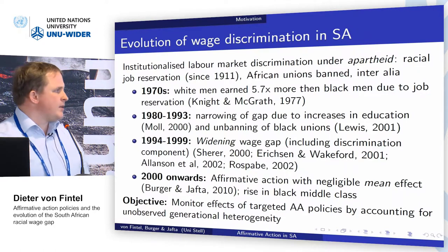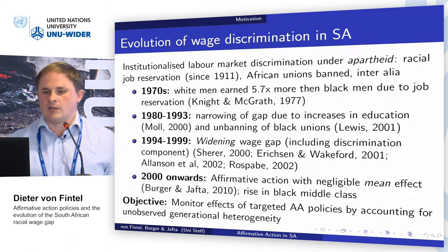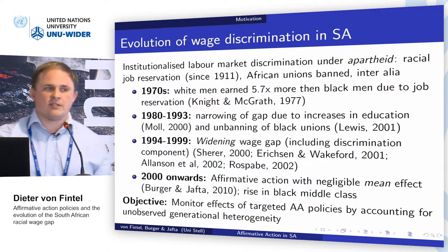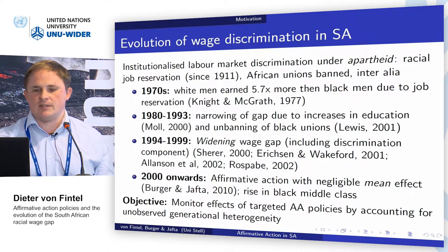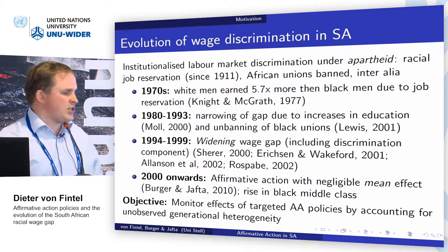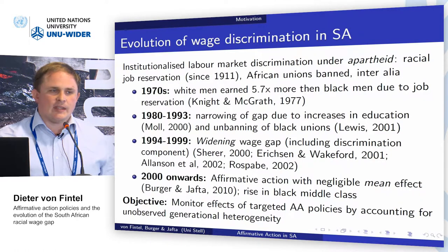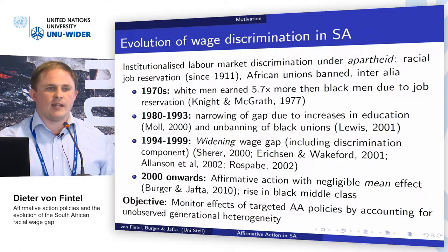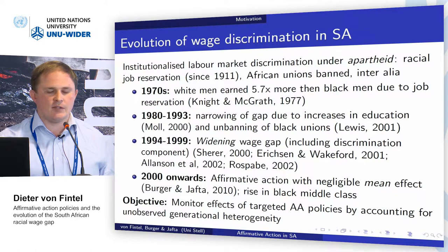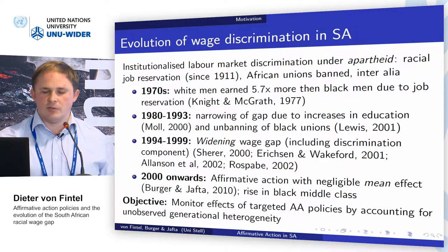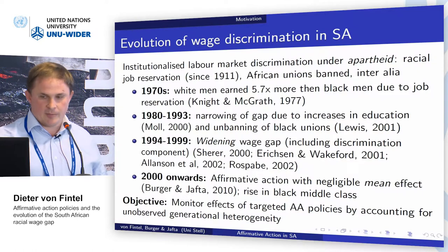What this paper will do is monitor the effects of these targeted affirmative action policies and see whether they changed trajectories. Because the evidence has been mixed, we're also going to look at unobserved generational heterogeneity — it's not something we can look at at the individual level because typically in these studies there are many unobservables which we worry about.